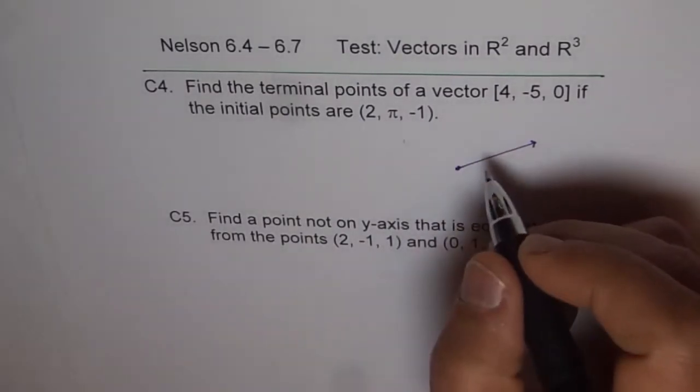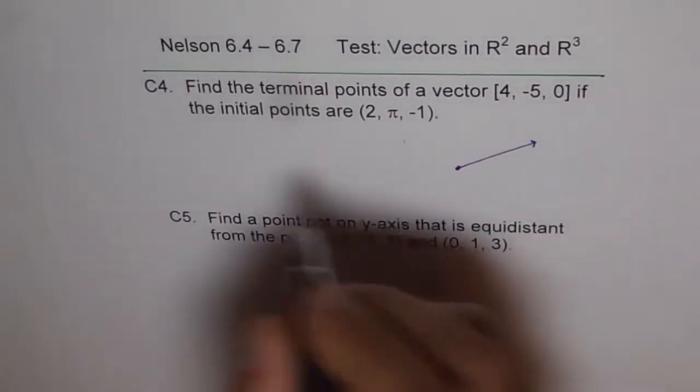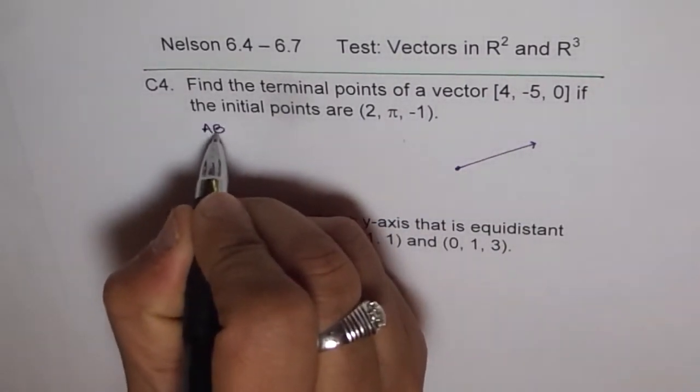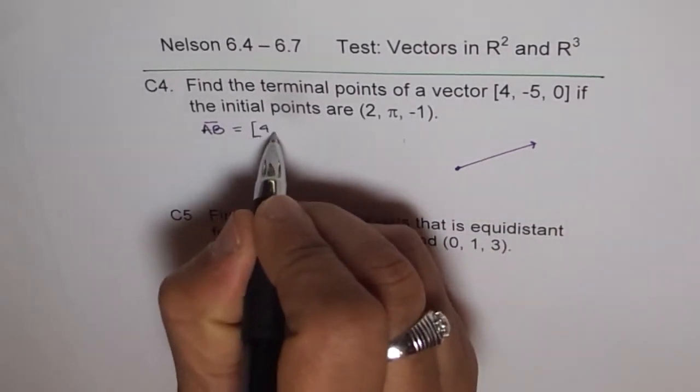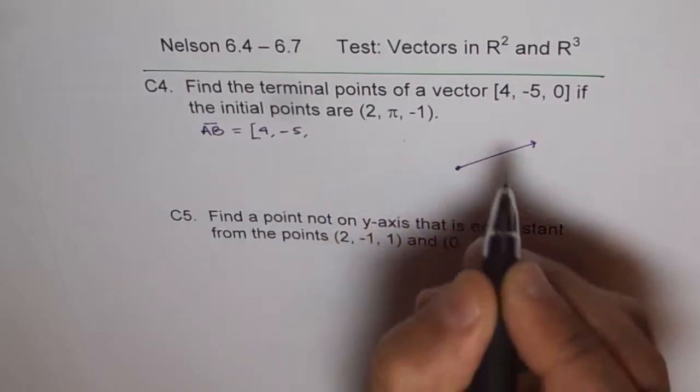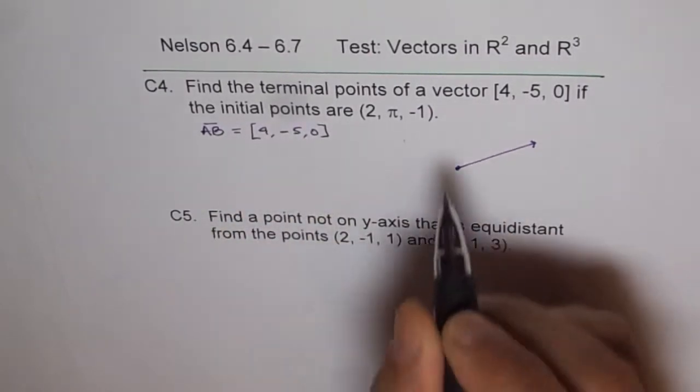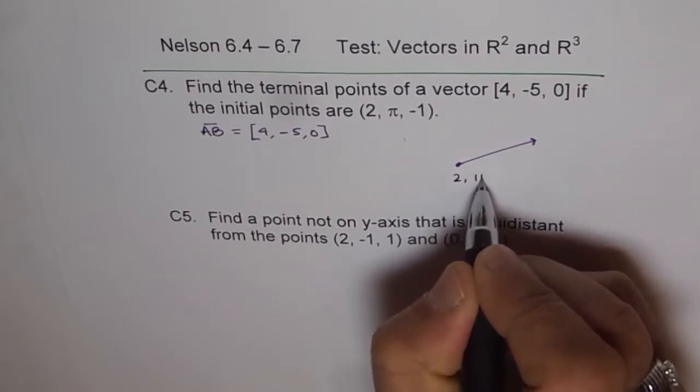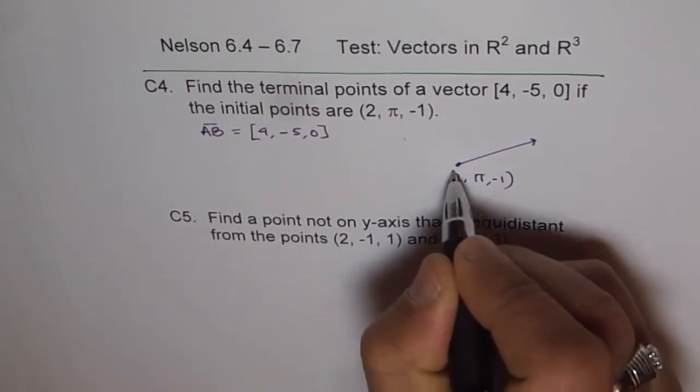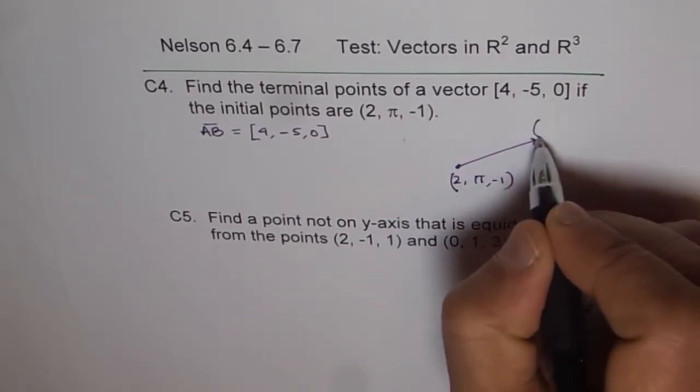let's say the vector is A to B, and vector AB is equal to [4, -5, 0], whose initial points are, as shown here, (2, π, -1). So we need to find these points.